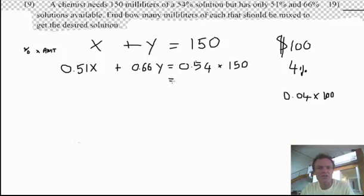Now, I can actually do that on the right-hand side. So bear with me. 0.54 times 150 equals, that's 81. So that equals 81, okay?